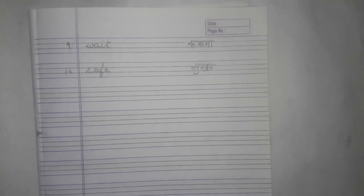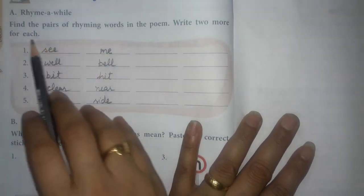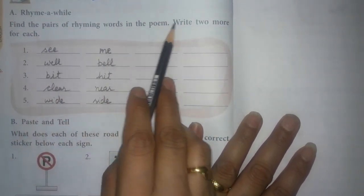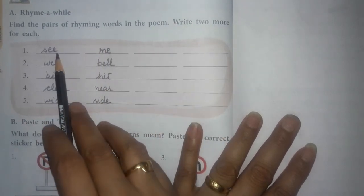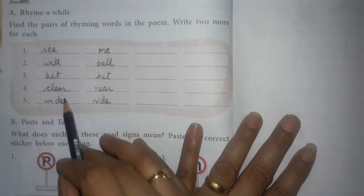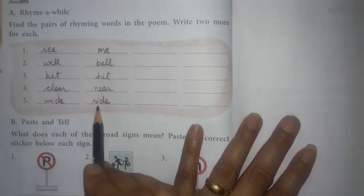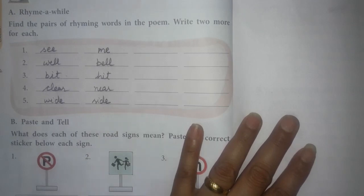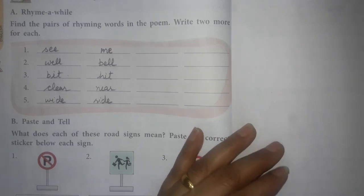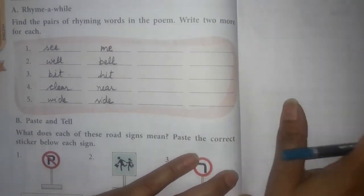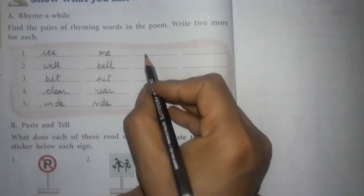Now let's proceed to the book exercise. This is the A part, rhyme a while. Find the pairs of the rhyming words in the poem. Write two more for each. I have found the rhyming words: see, will, bit, clear, wide. See with me, will bell, bit hit, clear near, wide side. These are the five words in your poem.